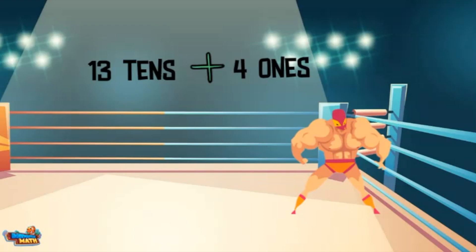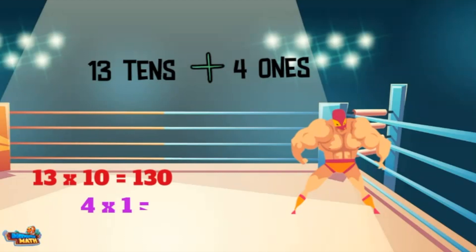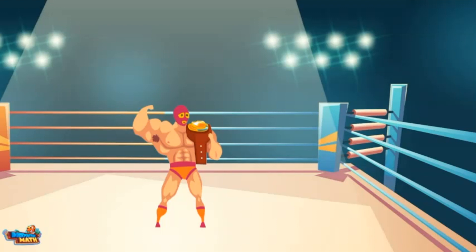To find the value of thirteen tens, we multiply thirteen times ten. This equals one hundred thirty, and then the four ones. Tenacious Tender is pure talent. That concludes today's match. Thanks for joining for composing and decomposing numbers.